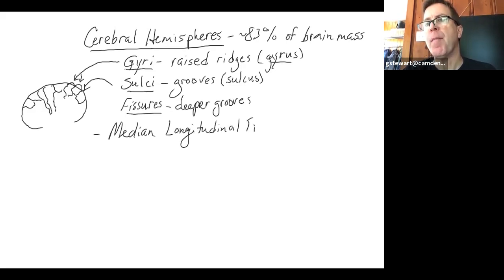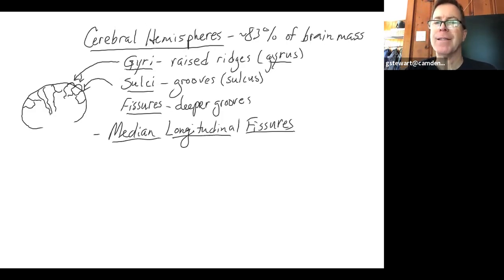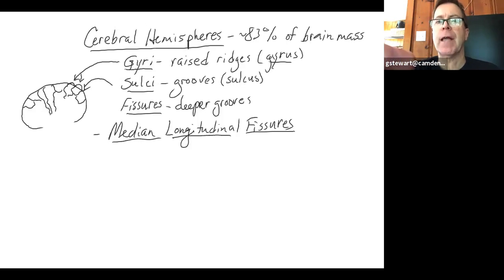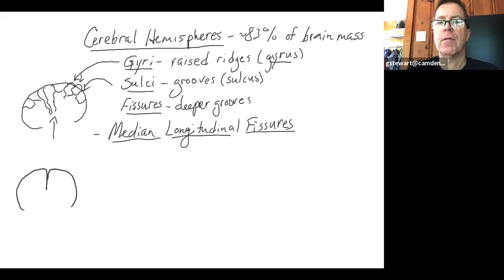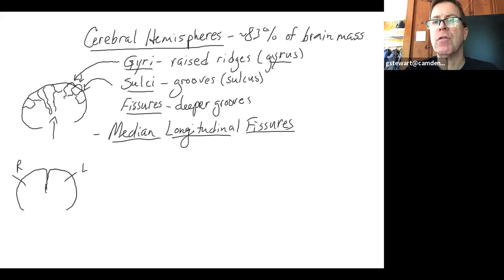There are cerebral hemisphere landmarks that are good to know. The first is the median longitudinal fissure — it's the center seam of the brain. If we look at a frontal view of the brain, you'd see this deep groove running down the middle separating the right and left hemispheres. We're talking about the person's right or left, not yours.